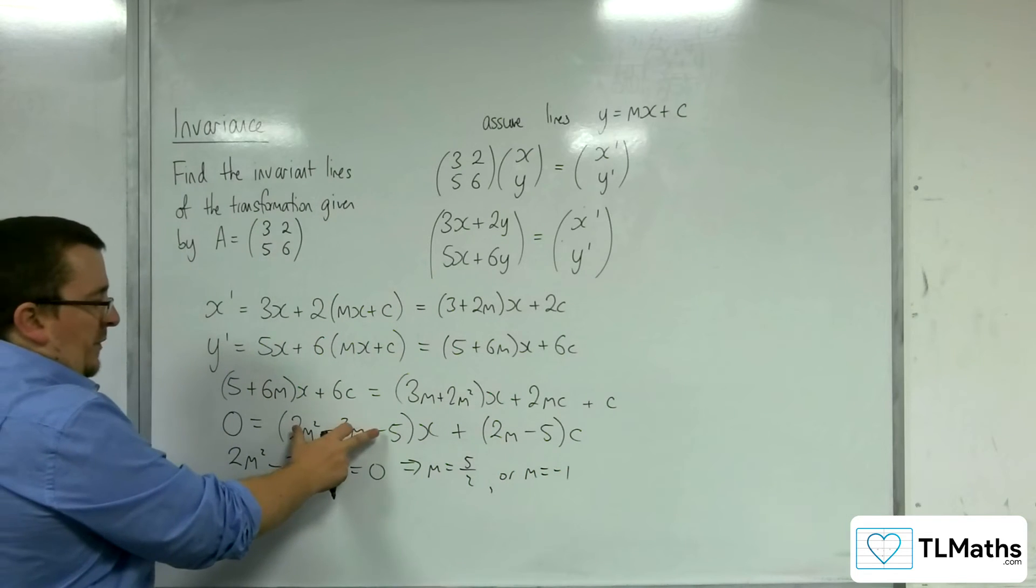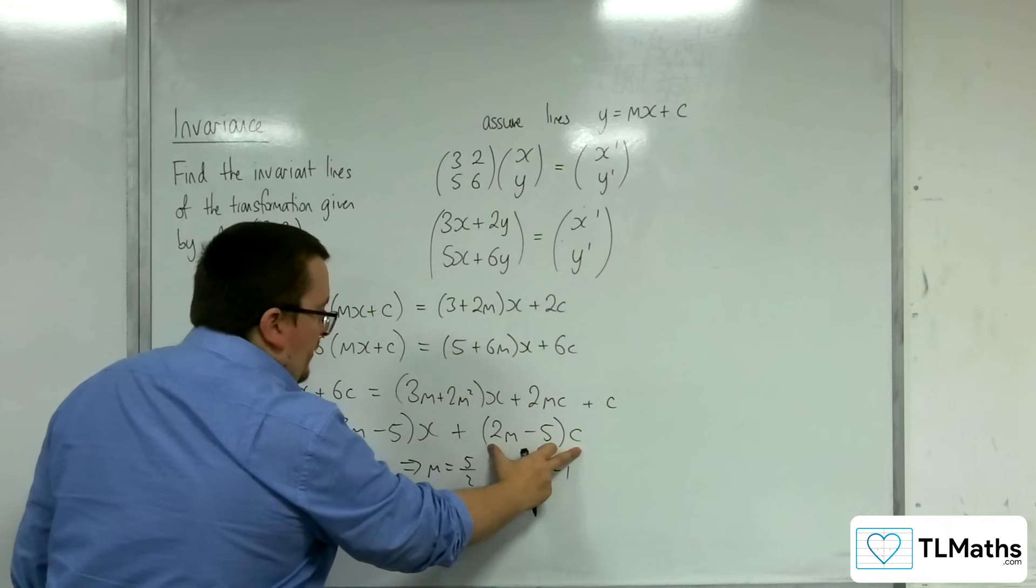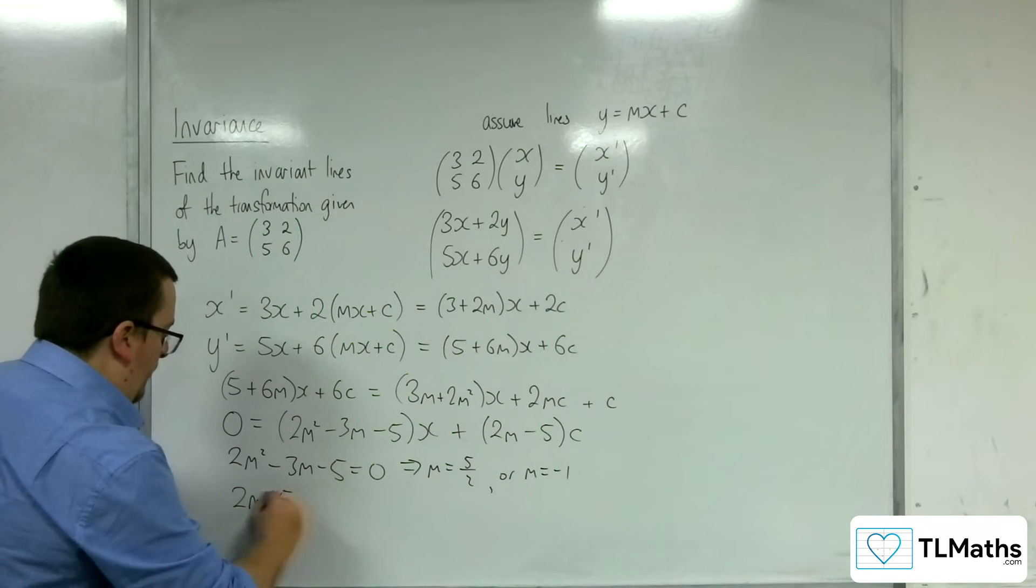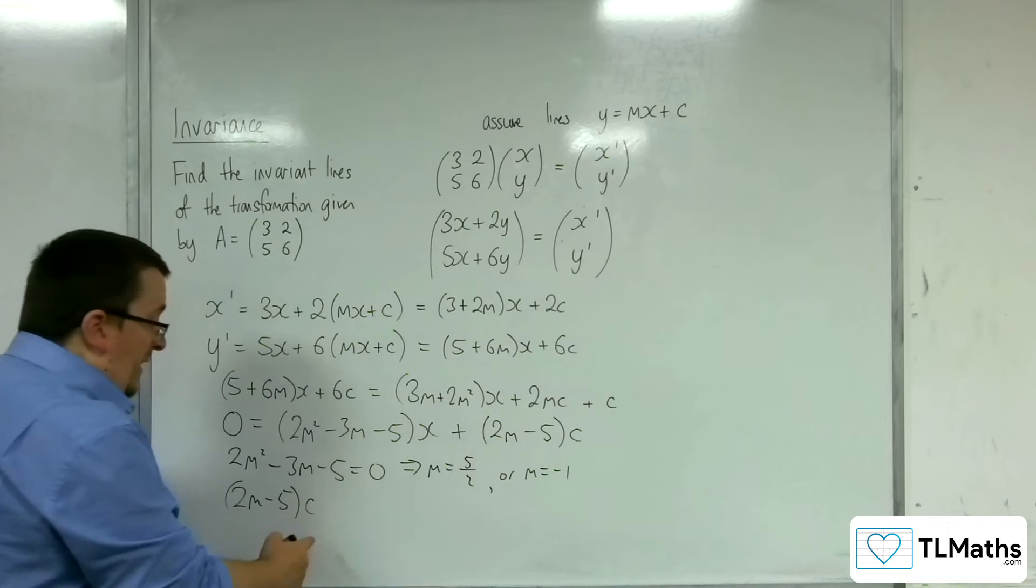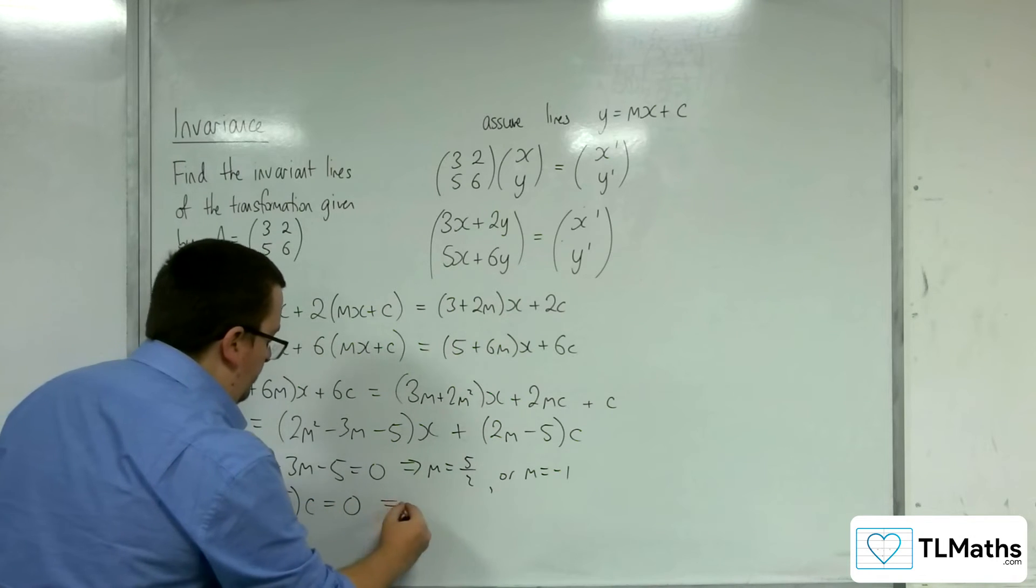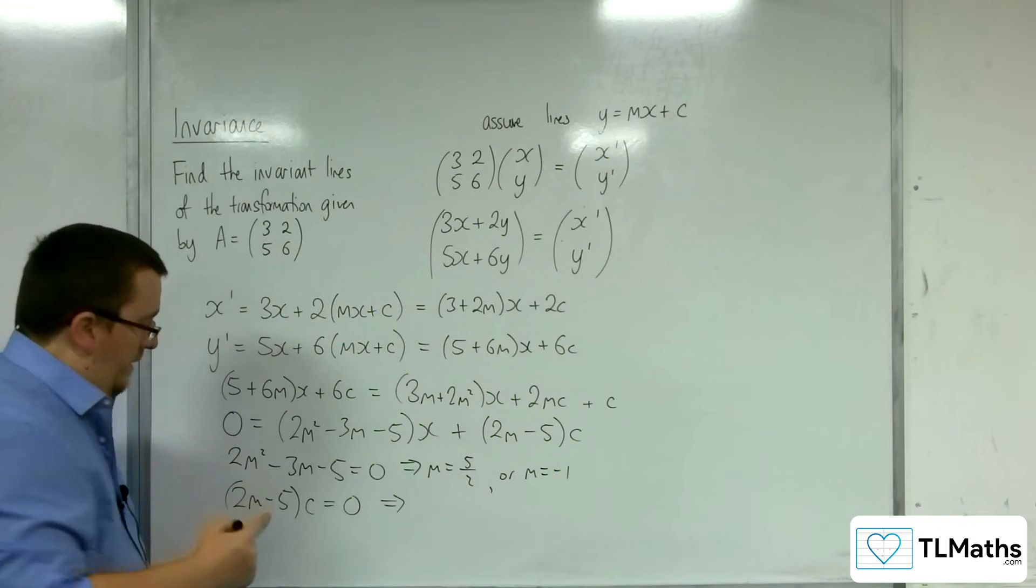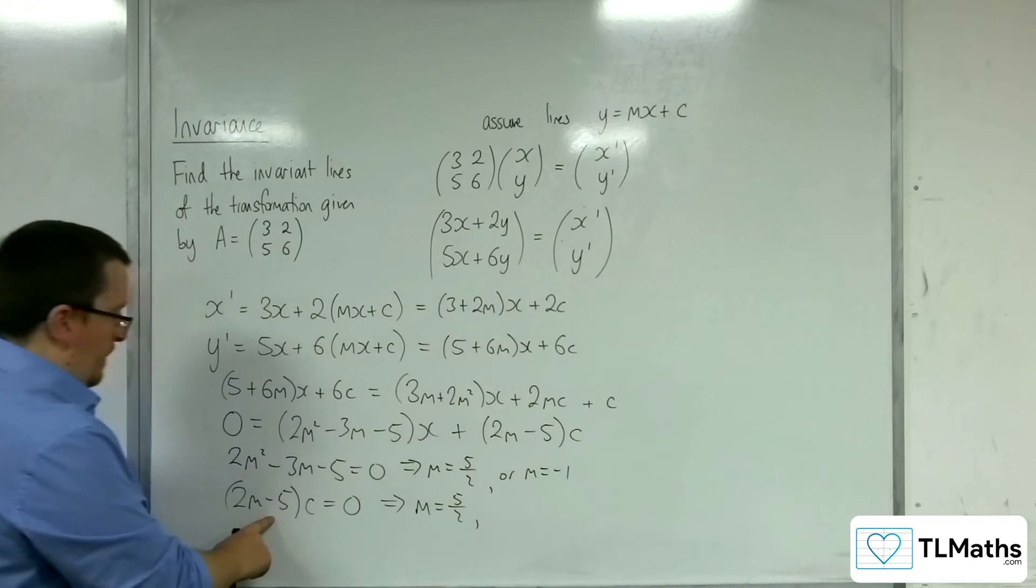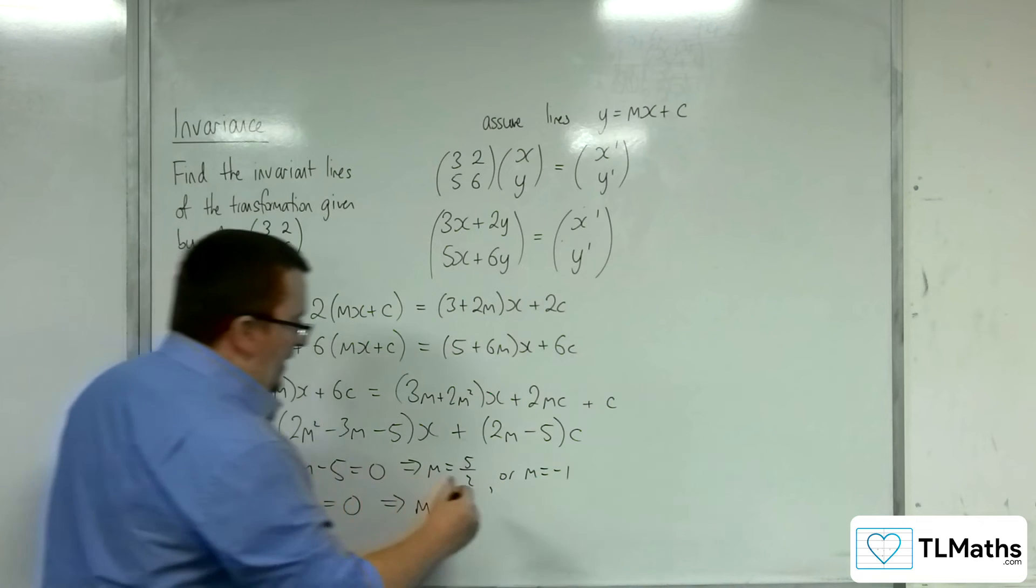Now not only that has that got to be 0, but this has got to be 0 as well because the left-hand side is 0. So 2m minus 5 times c has got to be 0. So either the m is 5 halves here as well, or the c is 0.